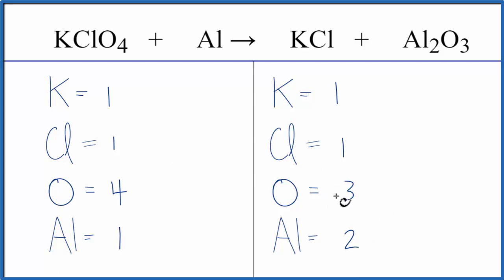So often when I have an odd number, I'll double it to get it to be an even number, but that would just give me six and then still have a problem balancing the oxygens.